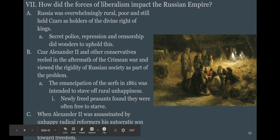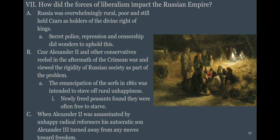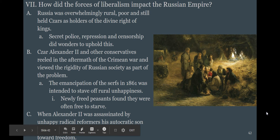Russia is the most autocratic country in this unit — poor, rural, with kings still claiming divine right, using secret police, repression, and censorship. Czar Alexander II frees the serfs — basically the Russian slaves — but gives them no money; they continue to starve and then assassinate him. His son thinks freeing the peasants was a bad idea and locks Russia down even further. This continues until the Russian Revolution in 1917, where liberalism is so stifled it turns into communism.